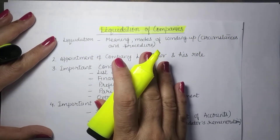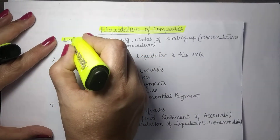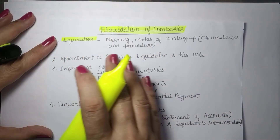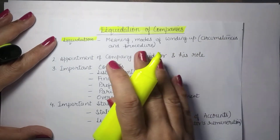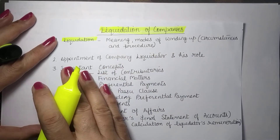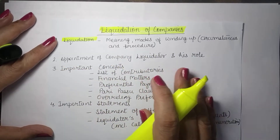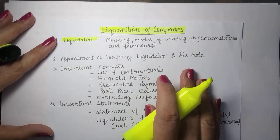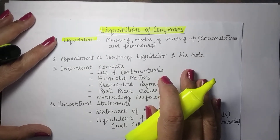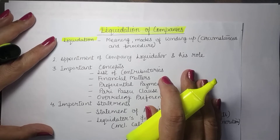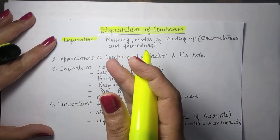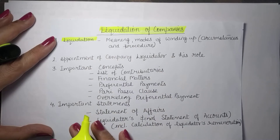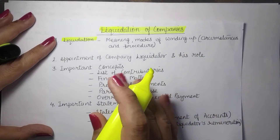The contents of this chapter are: Number 1 — Liquidation, that is the meaning, modes of winding up or liquidation, their circumstances and procedure. Number 2 — Appointment of company liquidators and their role, like when companies go into liquidation, a liquidator is appointed either by the company or by the tribunal. We will cover how the appointment takes place, what type of persons can be appointed, and what their role is in the liquidation proceedings.